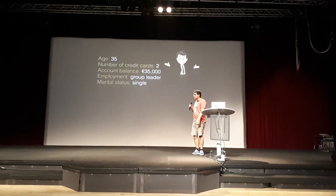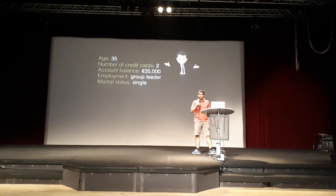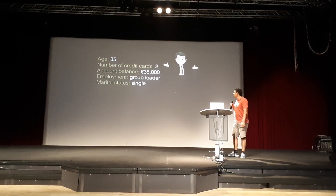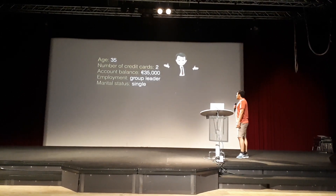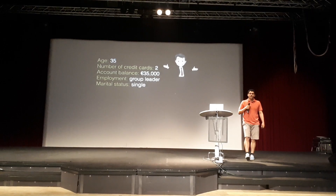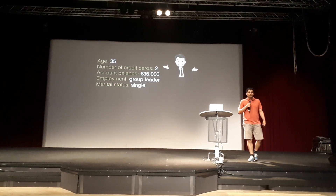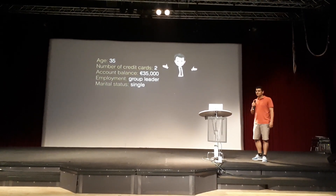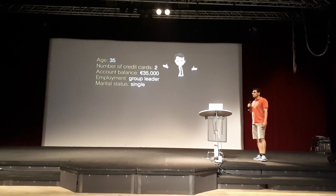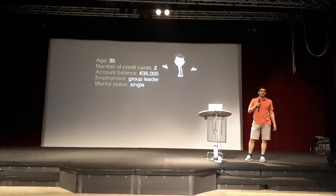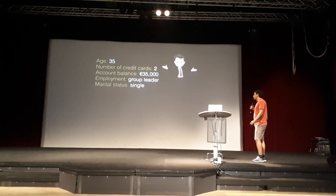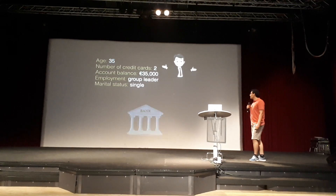This is Edward. He's 35, he has two credit cards, he saved 35,000 euros in the bank, he's employed as a group leader and is single. Edward is thinking of buying a home. After months of scrupulous savings and many open house viewings, he's finally found one that is his dream home and is ready to place an offer. However, first, he must visit a bank.